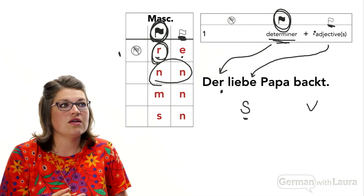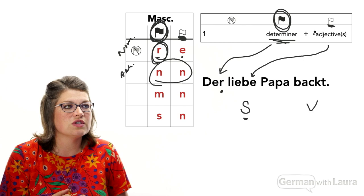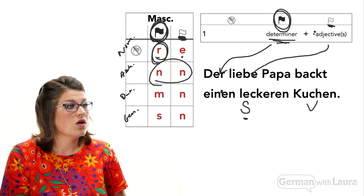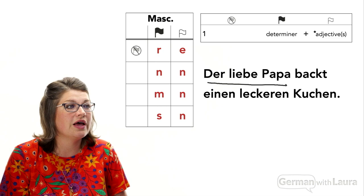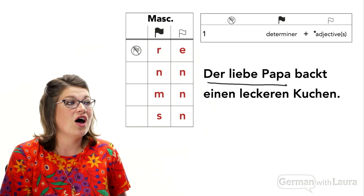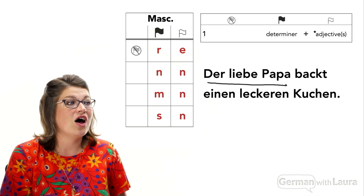If we start with the most basic sentence of a subject noun and then a verb — the caring papa bakes — we can see that our determiner has the strong R declension from the nominative case, because this is the subject noun. And then the adjective is taking the weak E declension from the masculine nominative. That covers nominative, accusative, dative, and genitive.